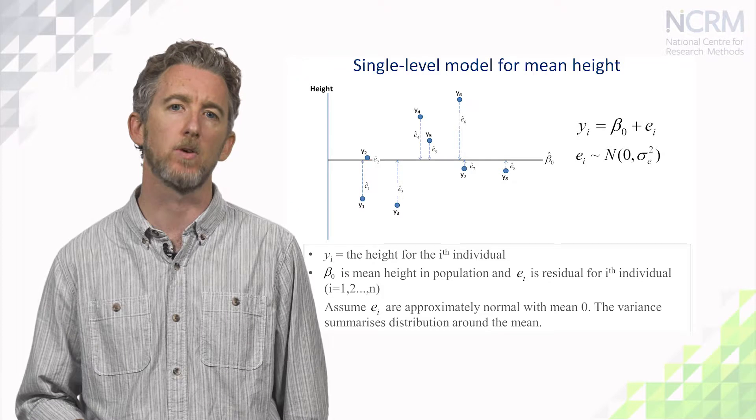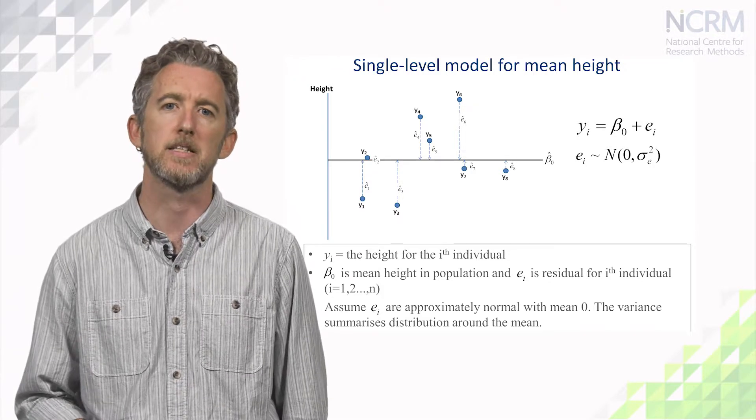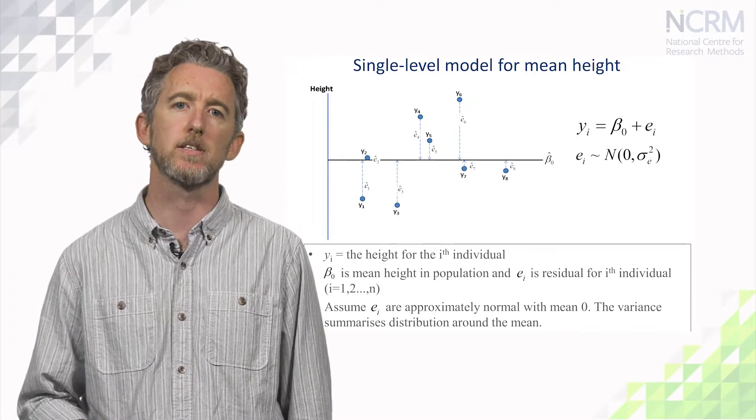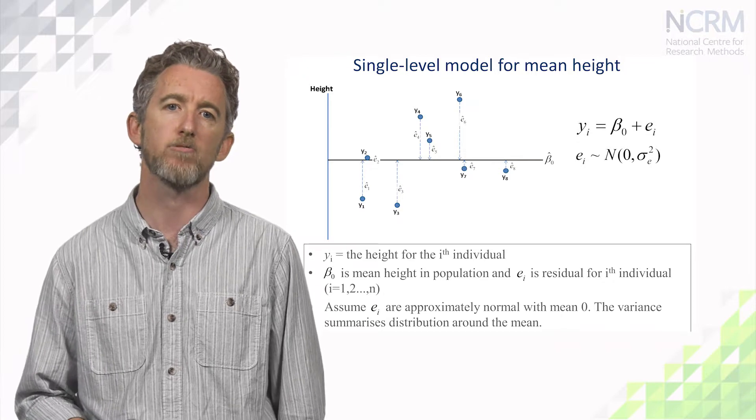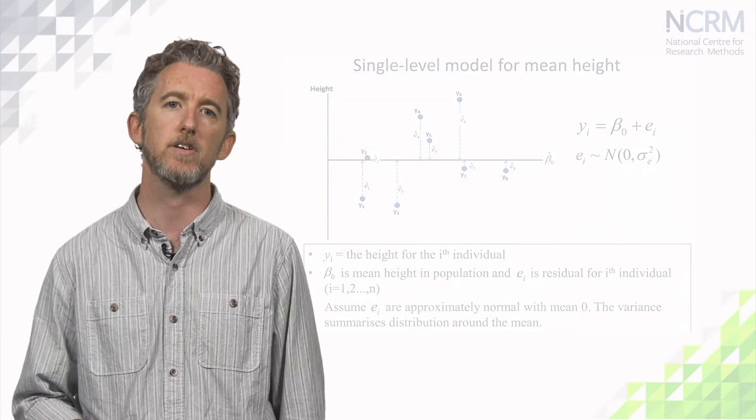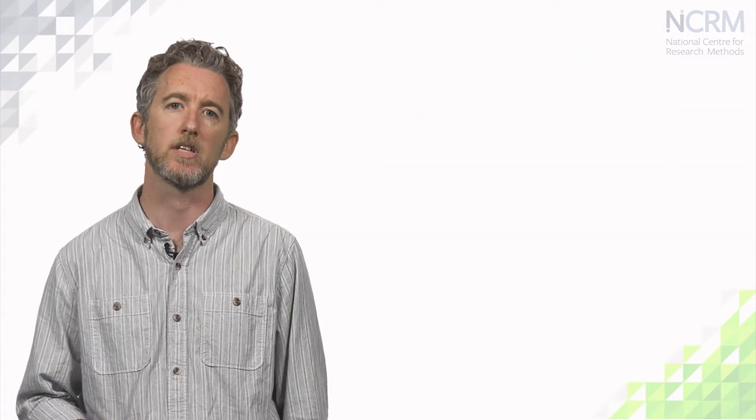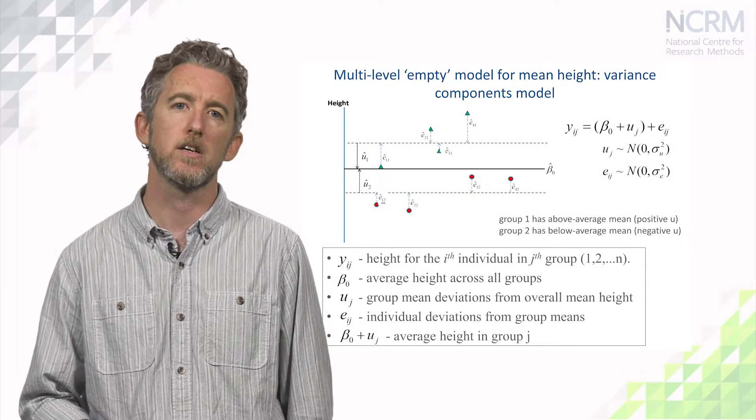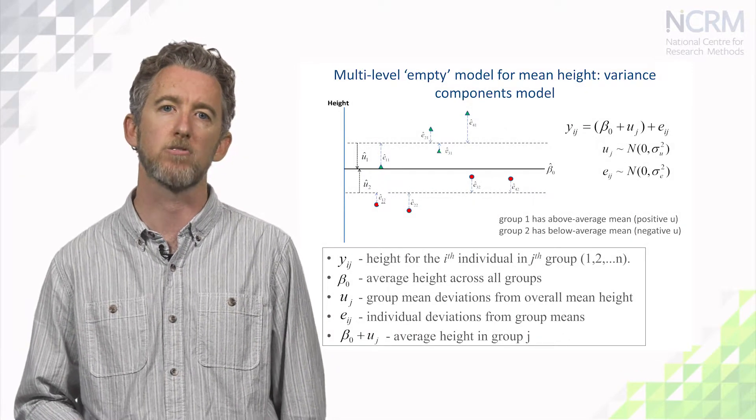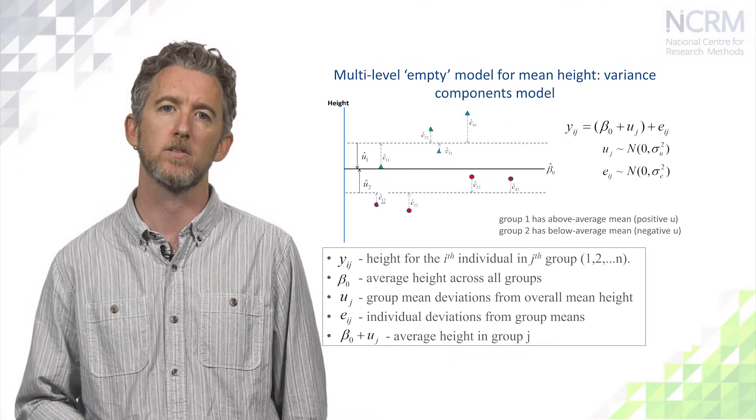But if we know the individuals belong to different groups, or families in this case, we can capitalise on this additional information and improve our estimates of the height of any individual. So here, our eight data points come from two families, one represented by green triangles and one by red circles.